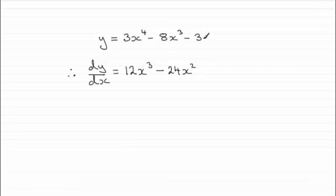And for the constant, remember that constants differentiate to 0. So dy by dx then, 12x cubed minus 24x squared.